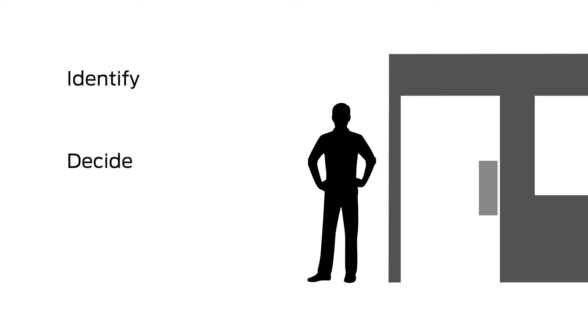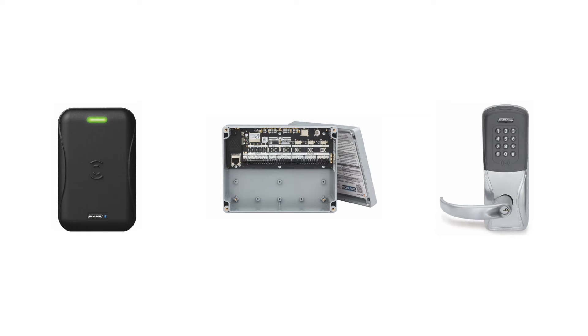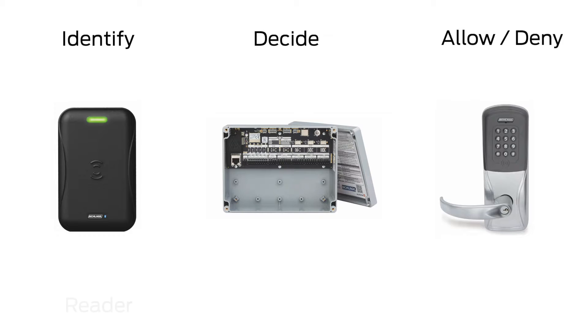One of the main goals of any access system is to keep the wrong people out and let the right people in. If you were standing at a door and your job was to make sure only authorized people went inside, you would have to positively identify each person asking to go in, decide if they should be allowed in, and then let them in or keep them out. The same concepts exist for access control systems, where the identifying, deciding, and unlocking are done by a reader, controller, and locking device.